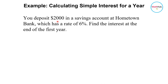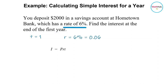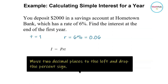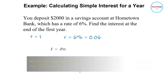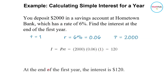You deposit two thousand dollars in a savings account at Hometown Bank, which has a rate of six percent. Find the interest at the end of the first year. The time is one year, and the rate is six percent, which expressed as a decimal is point zero six — you move the decimal point two places to the left. Multiply this by the principal amount of two thousand: two thousand times point zero six times one equals one hundred twenty.